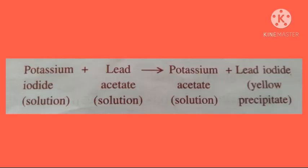The third characteristic is the formation of precipitate. In some chemical reactions, when both reactants are in solution form, the product formed is a precipitate — a solid insoluble substance formed after the reaction of both solutions. For example, when potassium iodide solution is added to lead acetate solution, a yellow precipitate is produced.